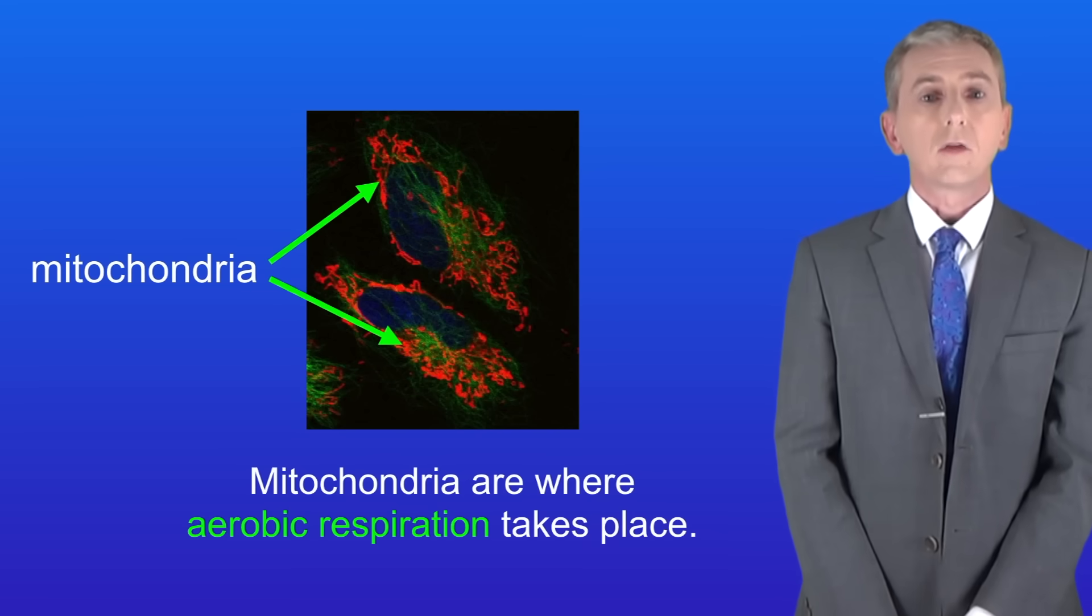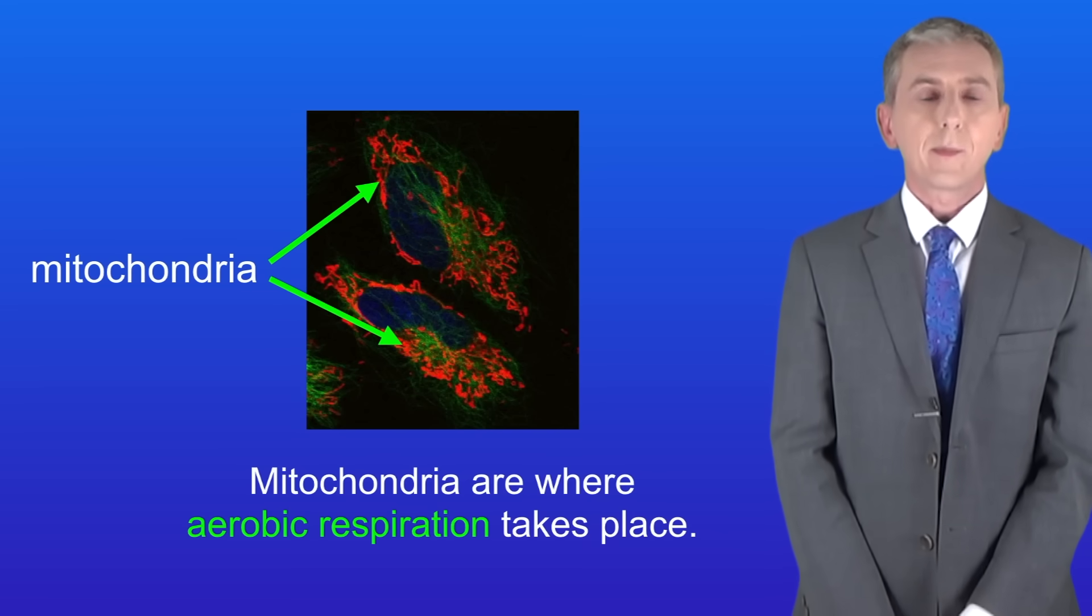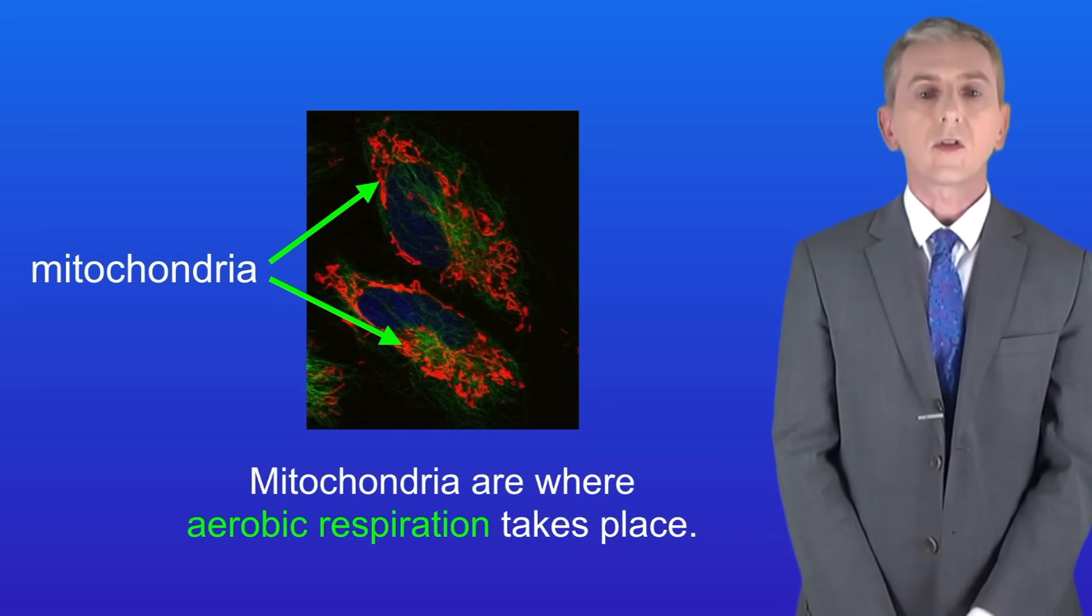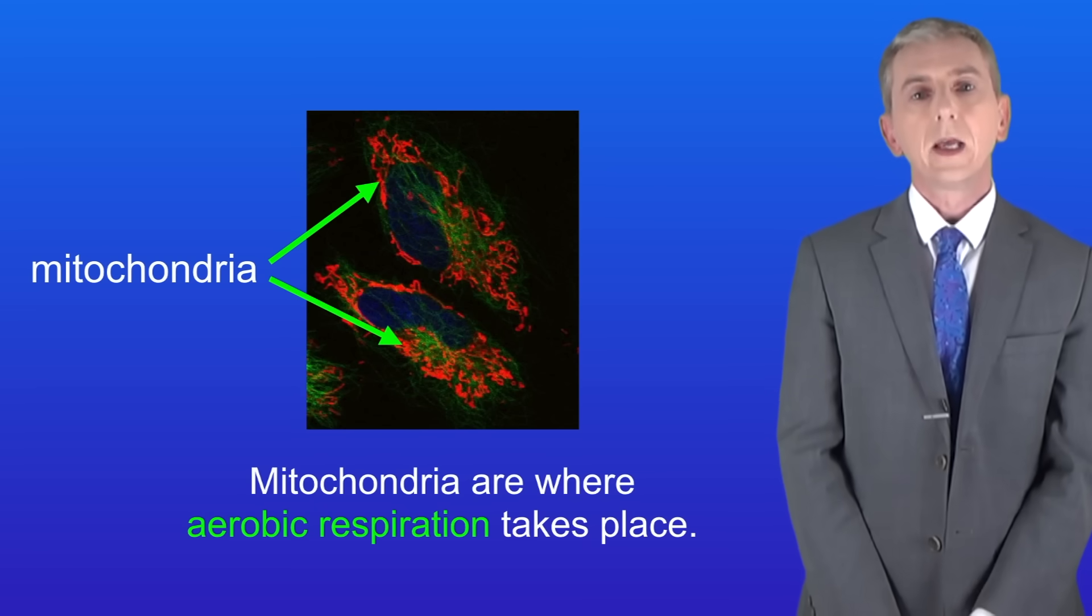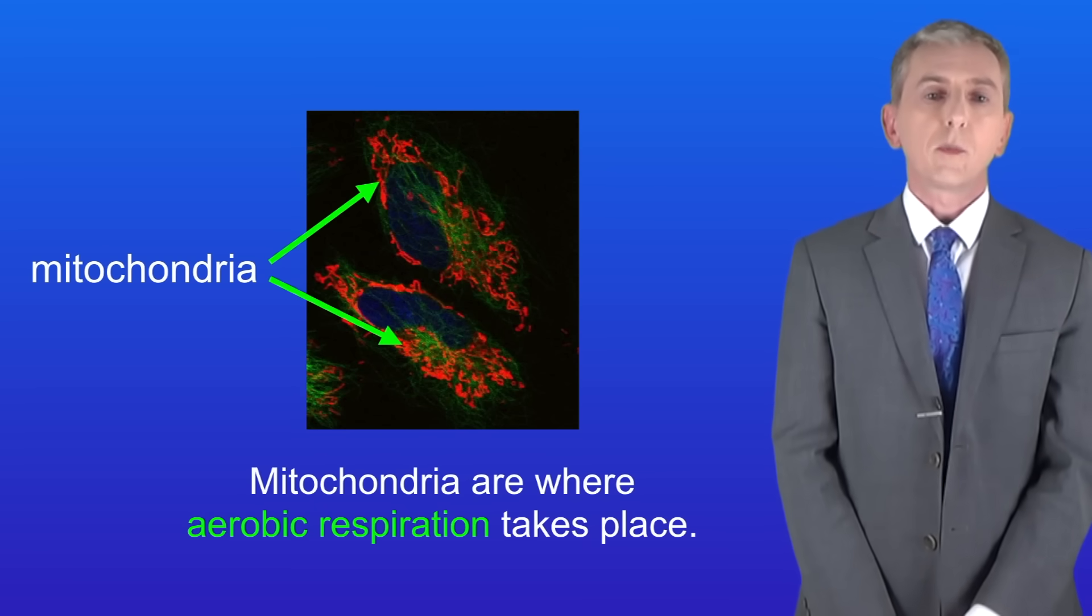Okay we're going to finish now by looking at ribosomes. Now ribosomes are extremely small so we can't see them using a light microscope. Instead we need to use a much more powerful microscope called an electron microscope.